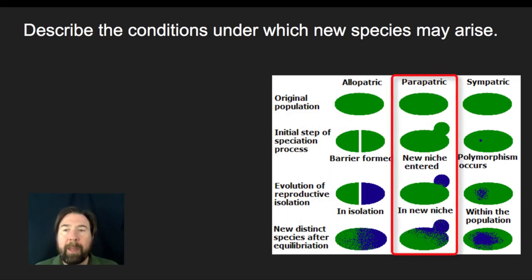In parapatric speciation, what we end up seeing is that we have a partial new home or a new niche emerges within a population. So this could be a result of something like a niche partitioning where a new food source becomes available, a new environment appears because of some sort of change, but something new occurs. And as a result of that new niche, some members of the population will fill that niche because those individuals are now filling that niche. As a result, there's going to be those that are filling that niche reproducing only with others that are filling that niche.